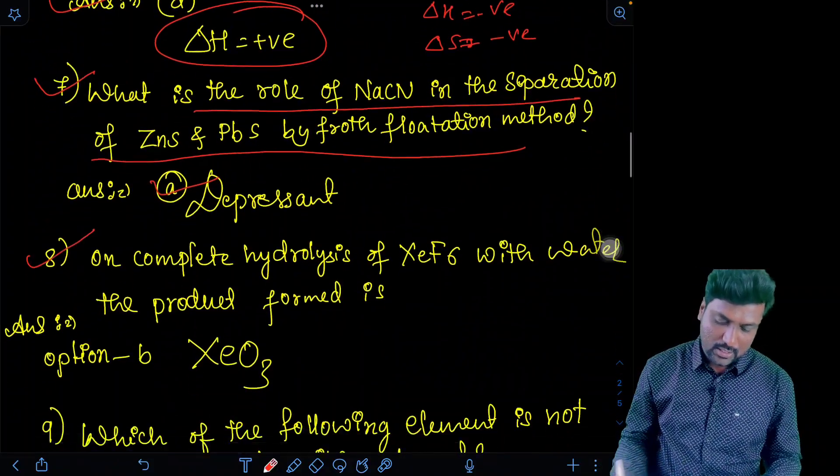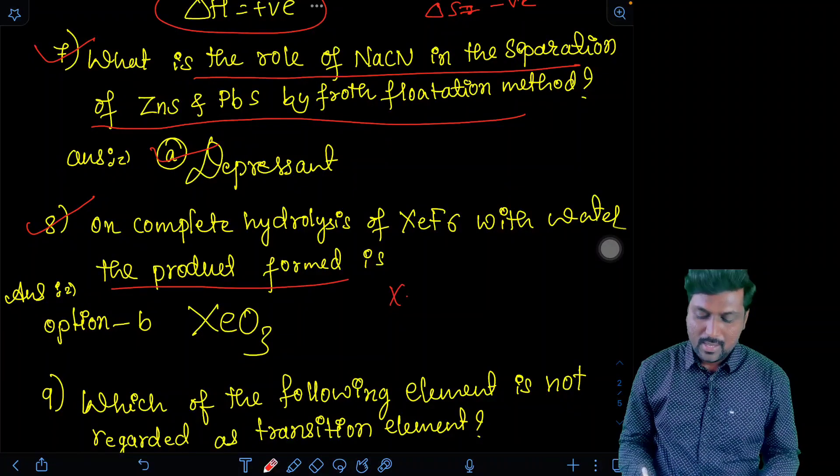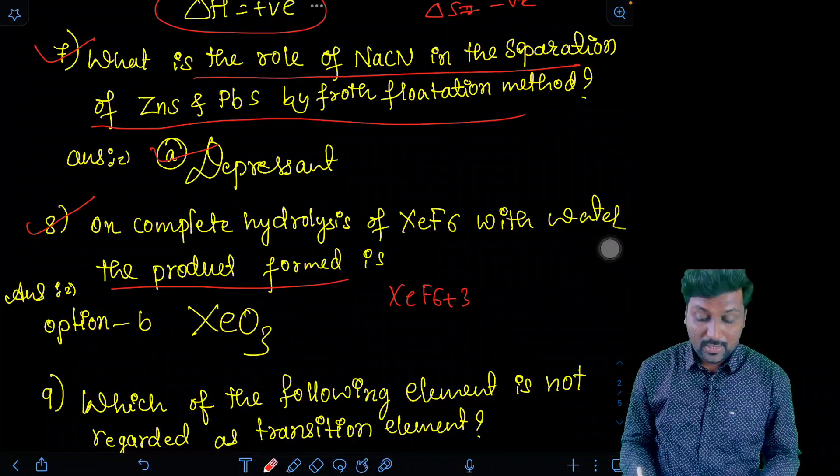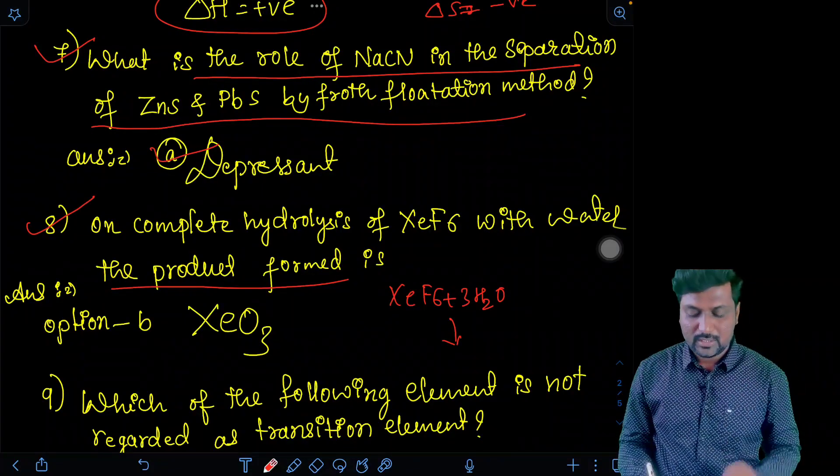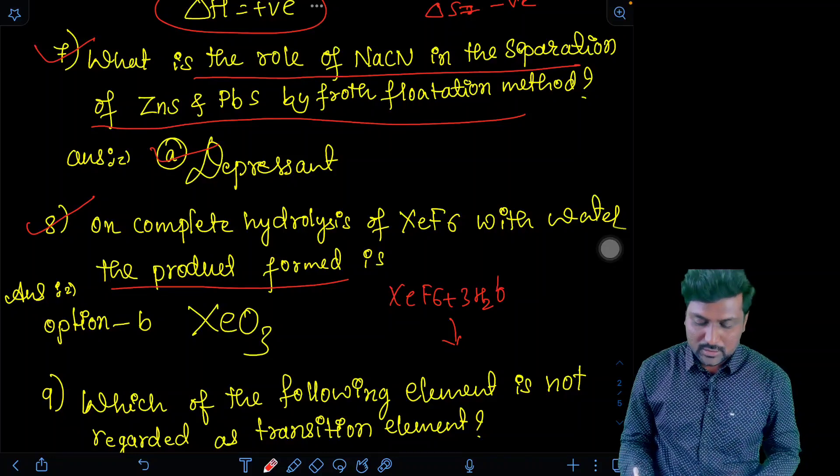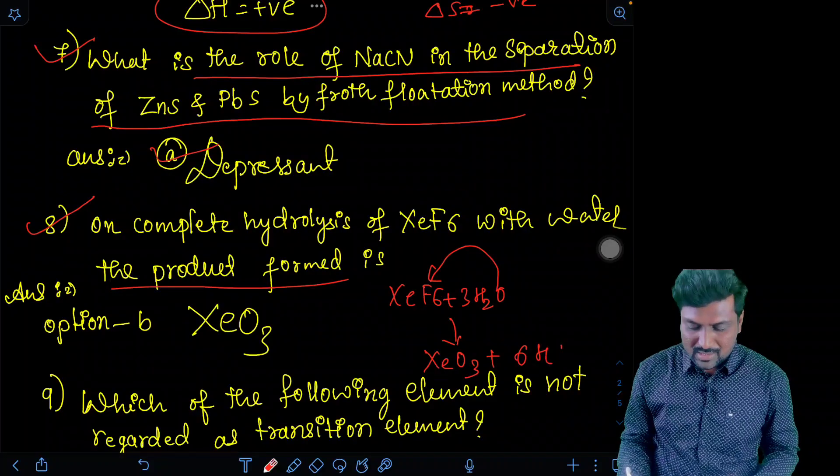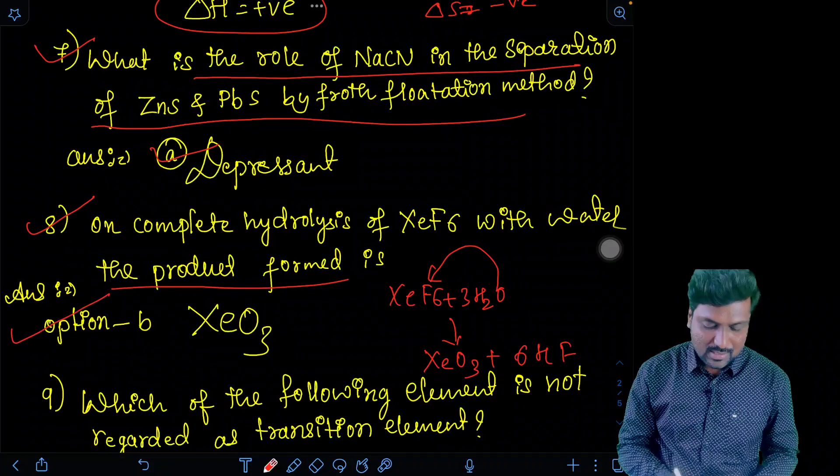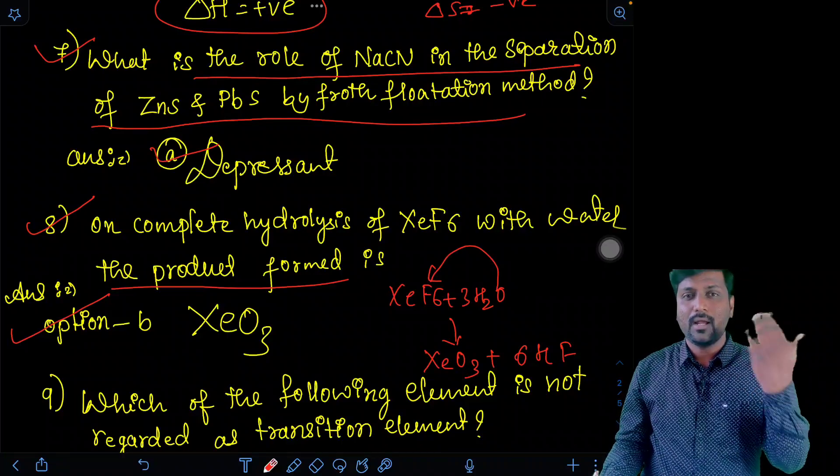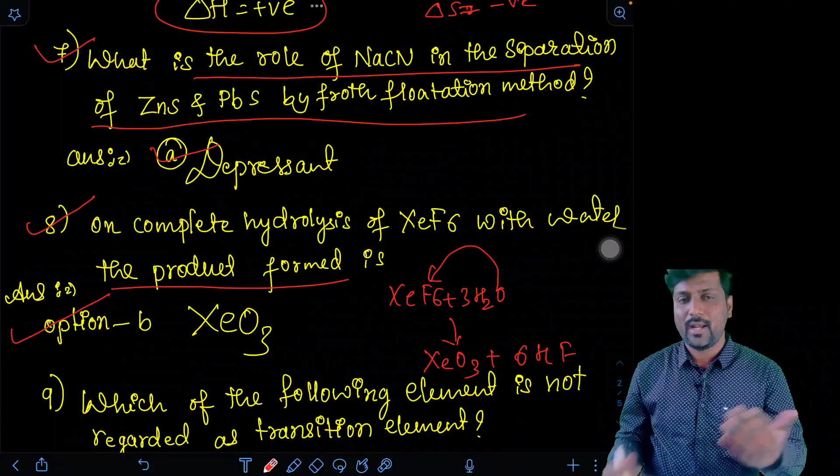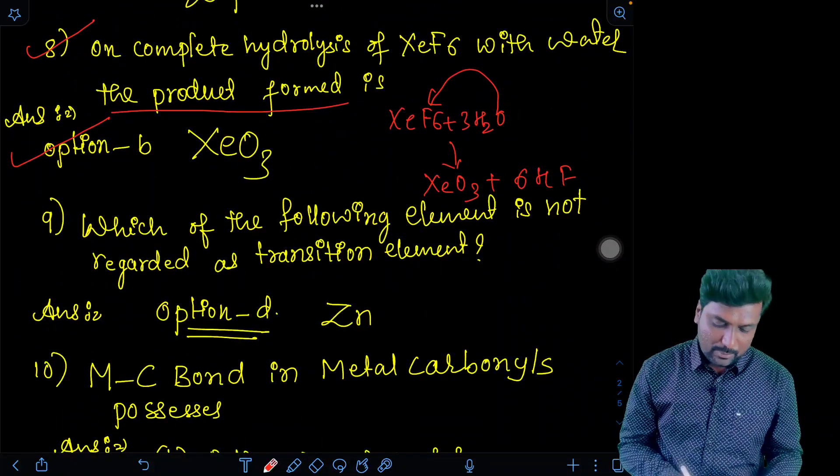Eighth question. On complete hydrolysis of xenon hexafluoride with water, the product. See, xenon hexafluoride on reacting with three molecules of water. Answer, see here, each oxygen valency two, each fluorine valency one, three oxygen, six fluorine. XeO3 and six HF. So therefore, the answer is option B, that is XeO3. Three molecules of water completely hydrolyze the xenon hexafluoride into xenon trioxide. 18 group element, p-block element.